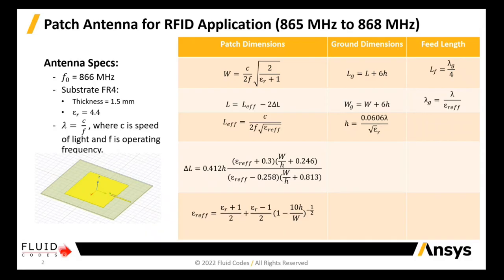Before designing any antenna, there are three things to consider: resonance frequency, substrate height, and the material's relative permittivity. These are the main parameters affecting the antenna performance.